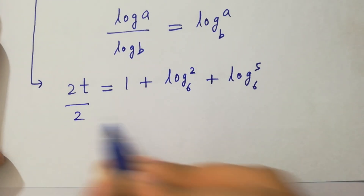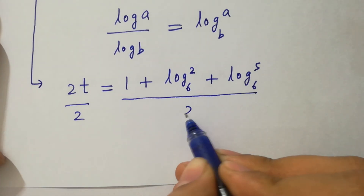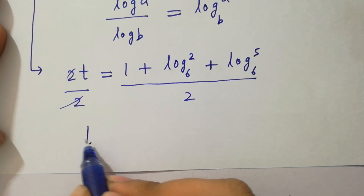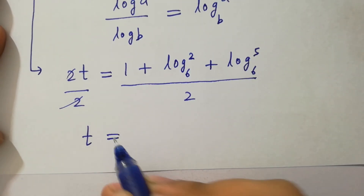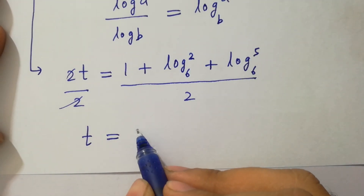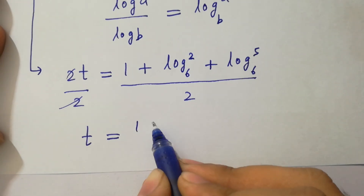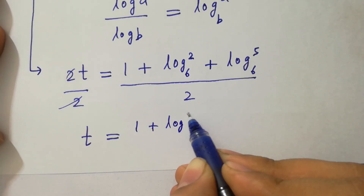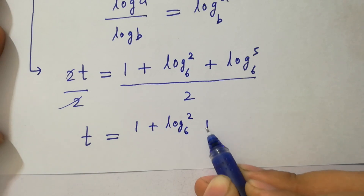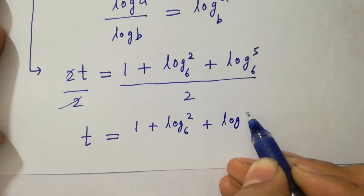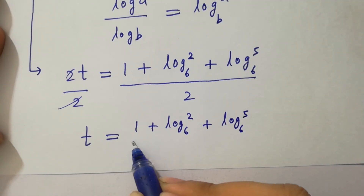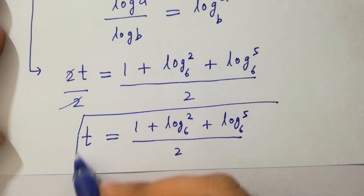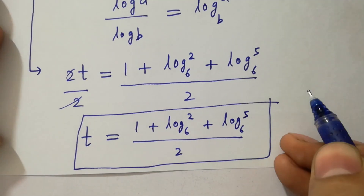Dividing both sides by 2, we get the value of t, which equals 1 plus log 2 to the base 6 plus log 5 to the base 6, all over 2. In the next step I am going to verify.